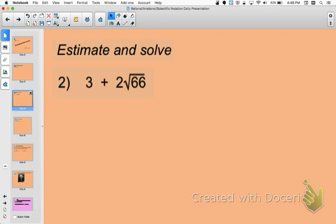Okay friends, here is example number 2. Please jot down this problem. This time, our problem looks a little more complex. The problem says 3 plus 2 times the square root of 66. Our first step, again, is going to be to figure out the approximation of the square root of 66. I know that 66 is between the perfect squares 64 and 81.